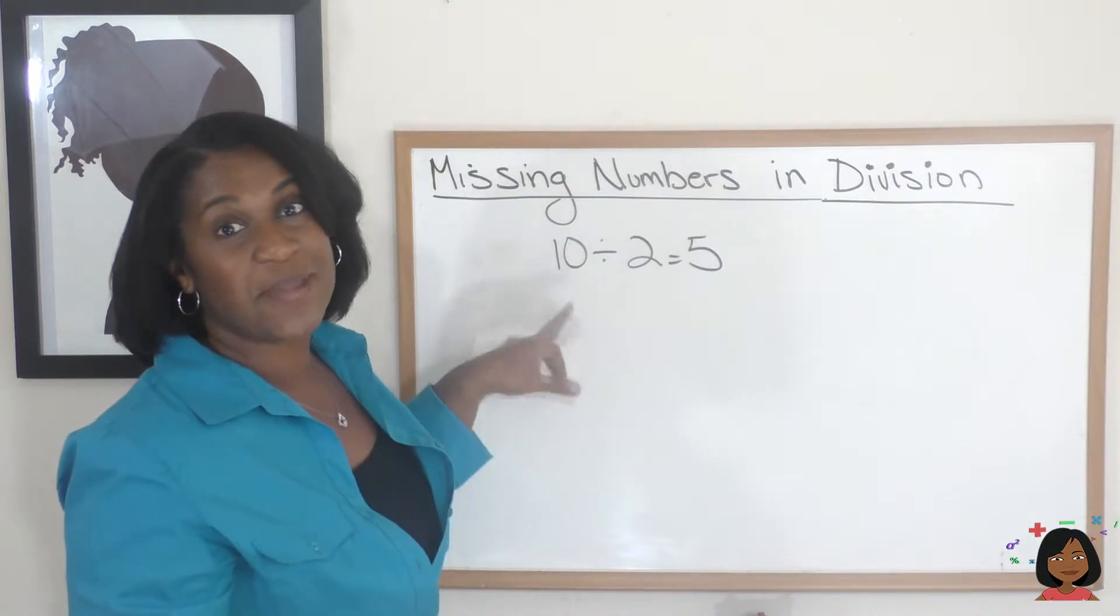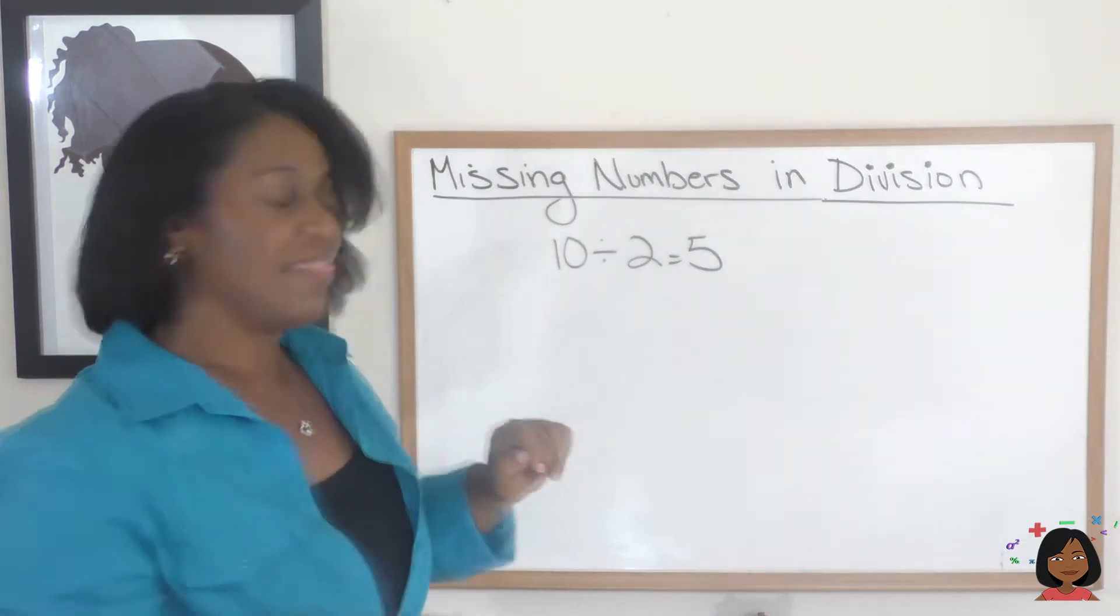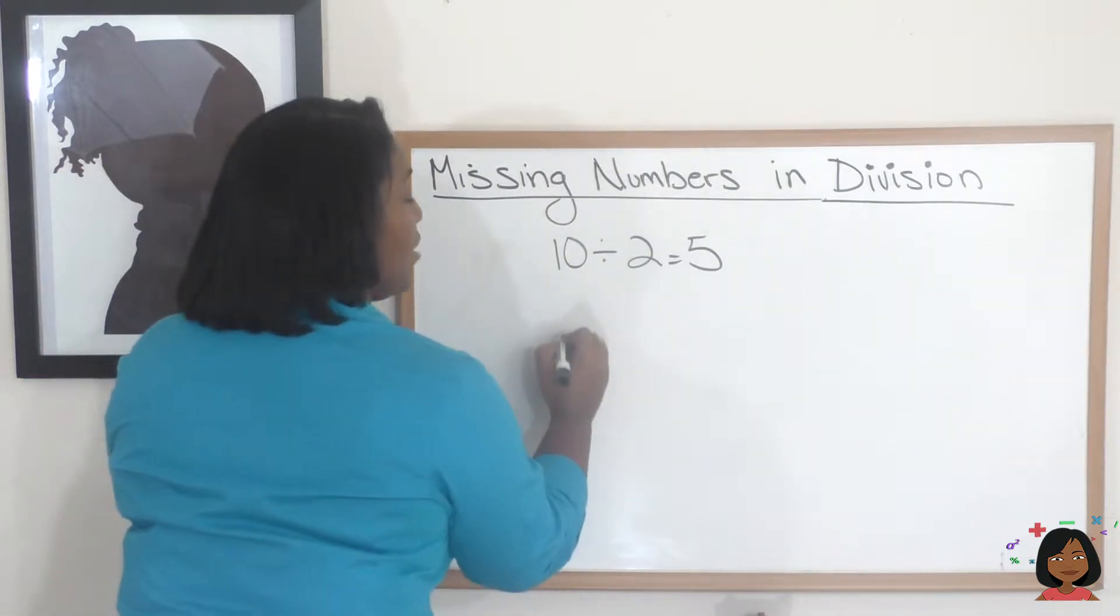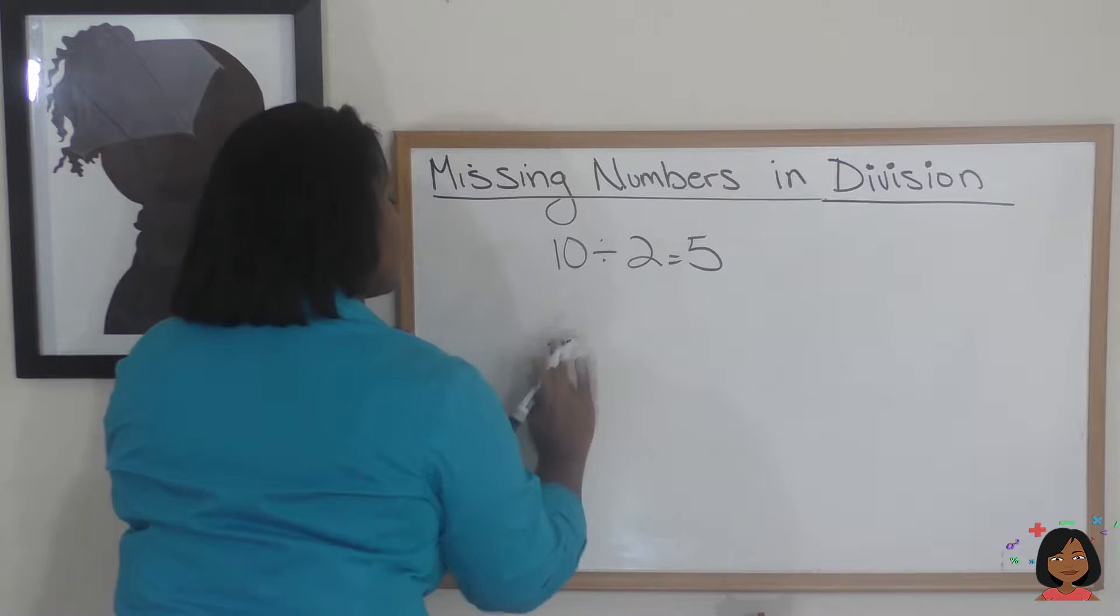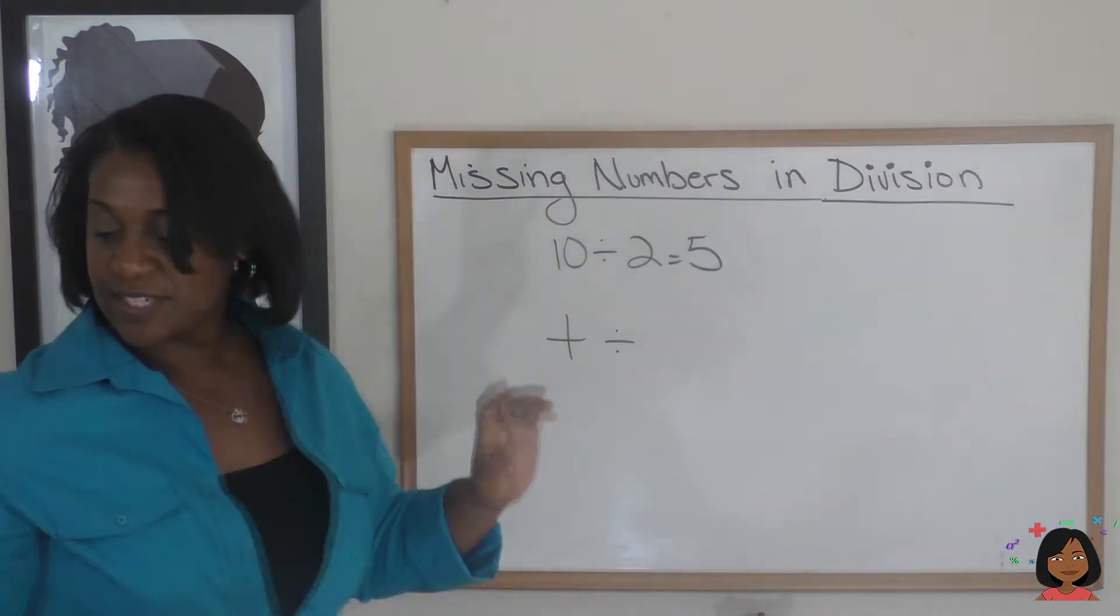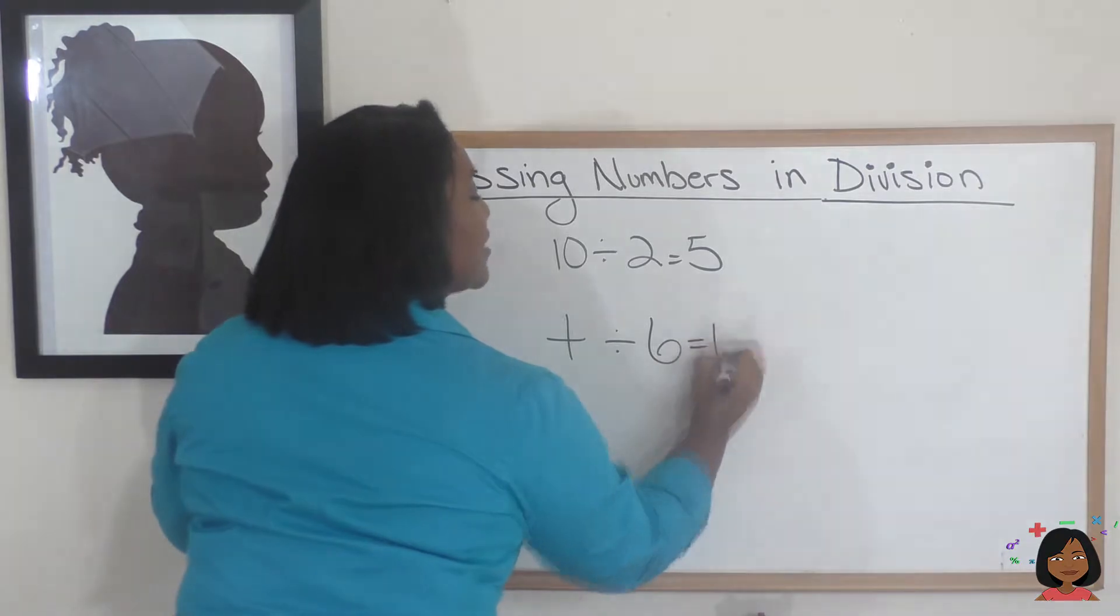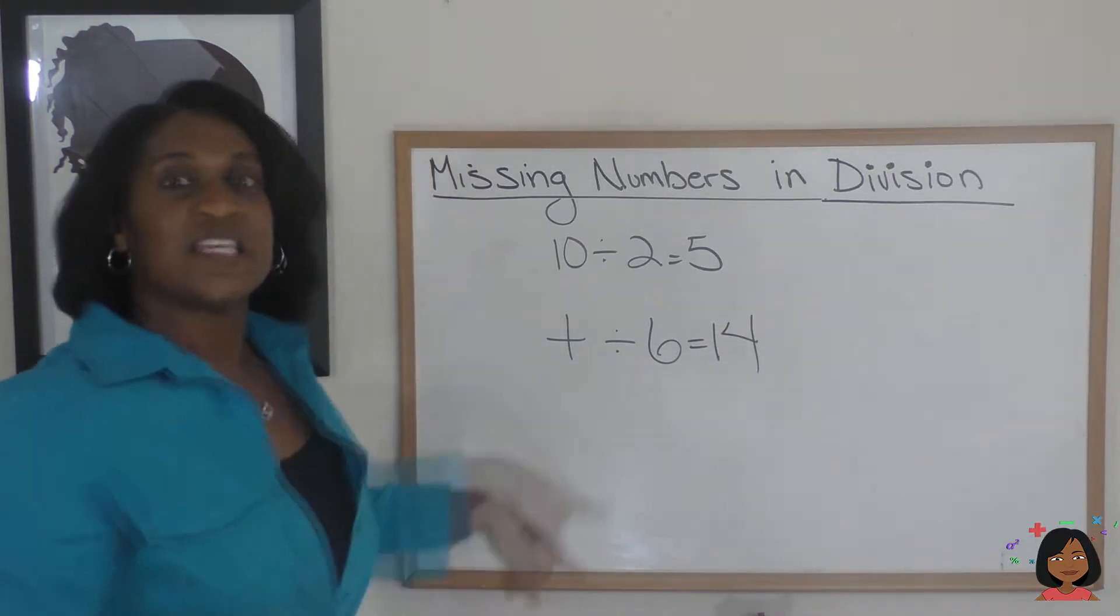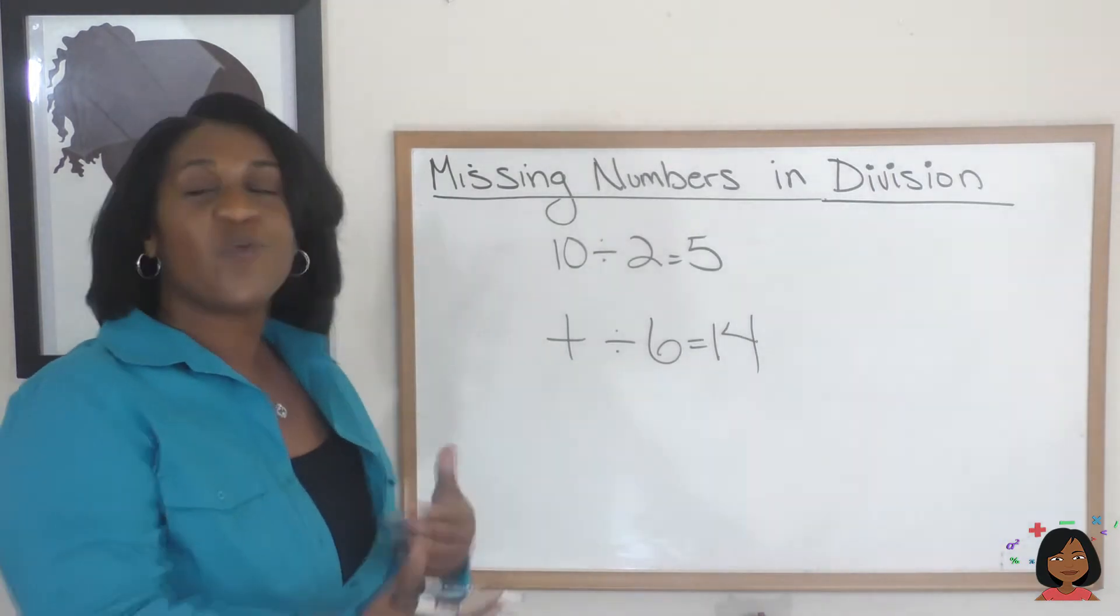Let's try it with a slightly bigger example. Let's say that we had my unknown is going to be the letter T, and we're going to divide T by the number 6, and that's going to equal 14.